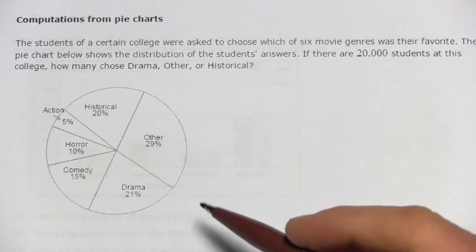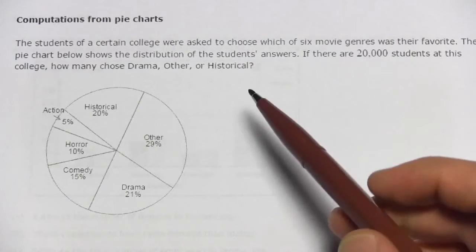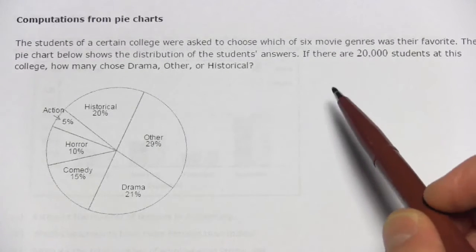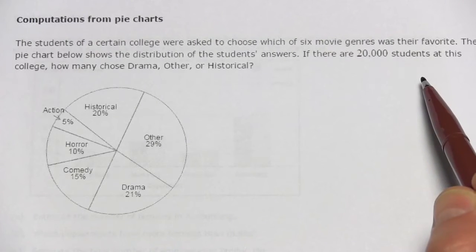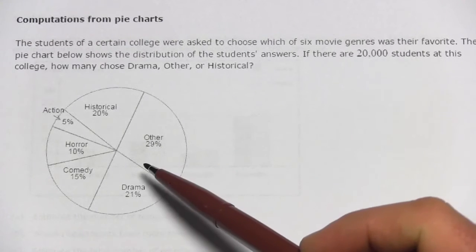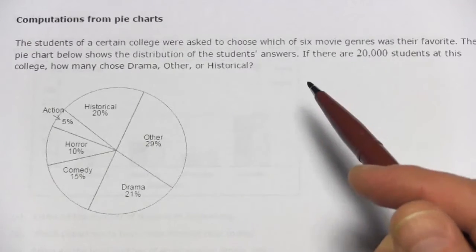20% chose historical. The pie chart below shows the distribution of students' answers. If there are 20,000 students at this college, how many chose drama, other, or historical?